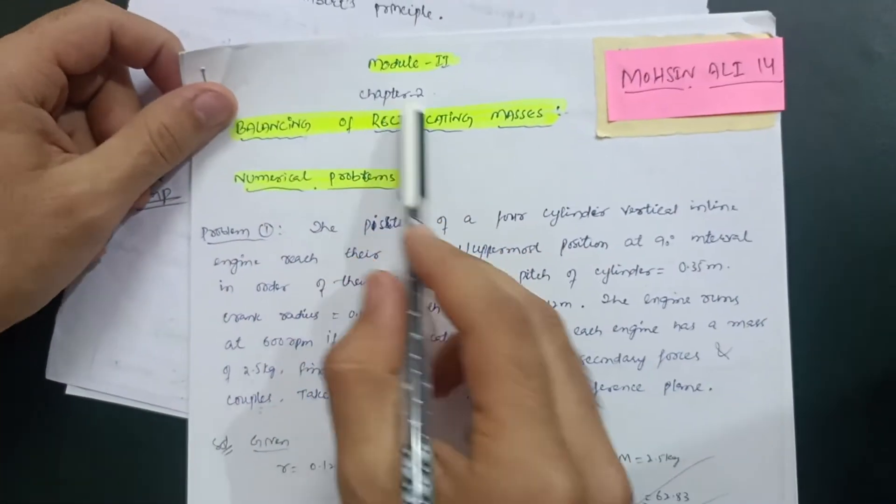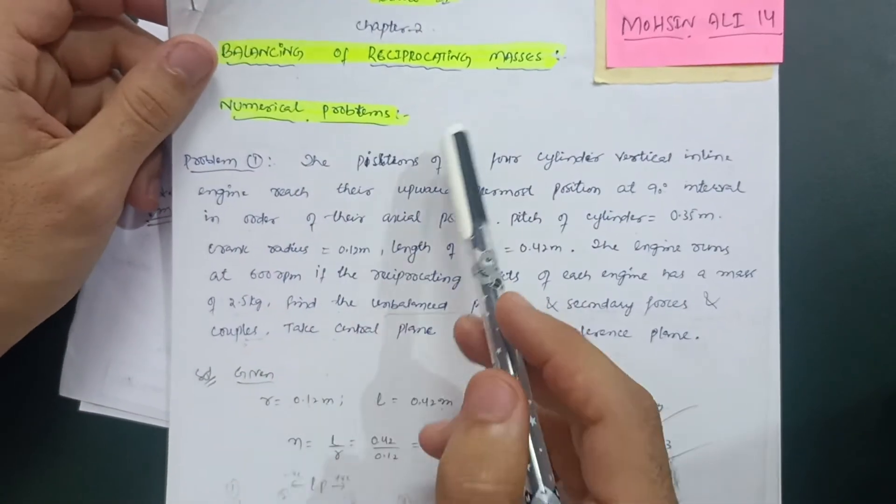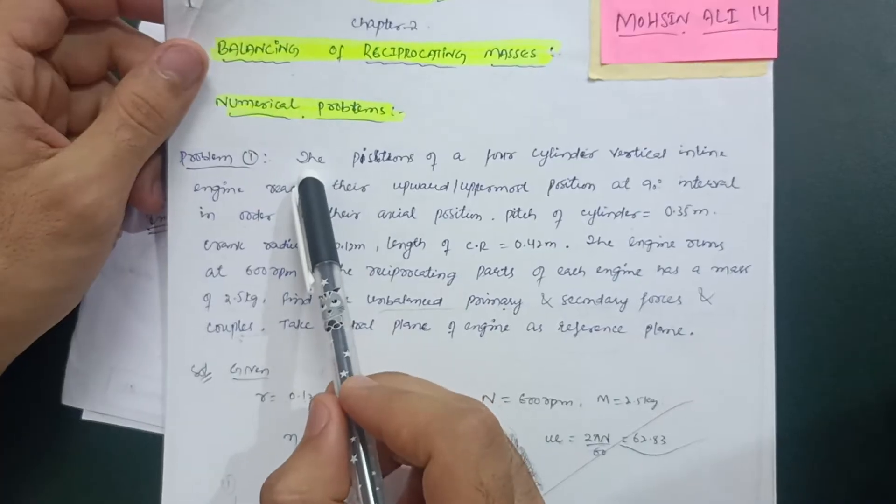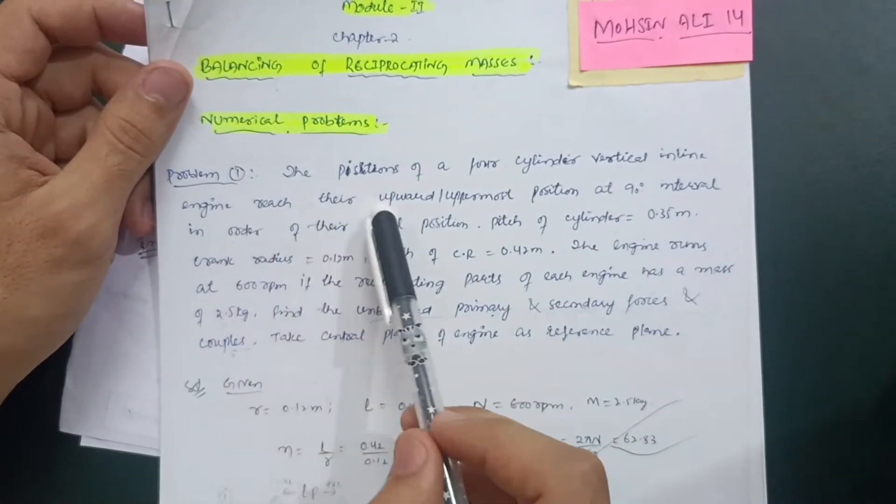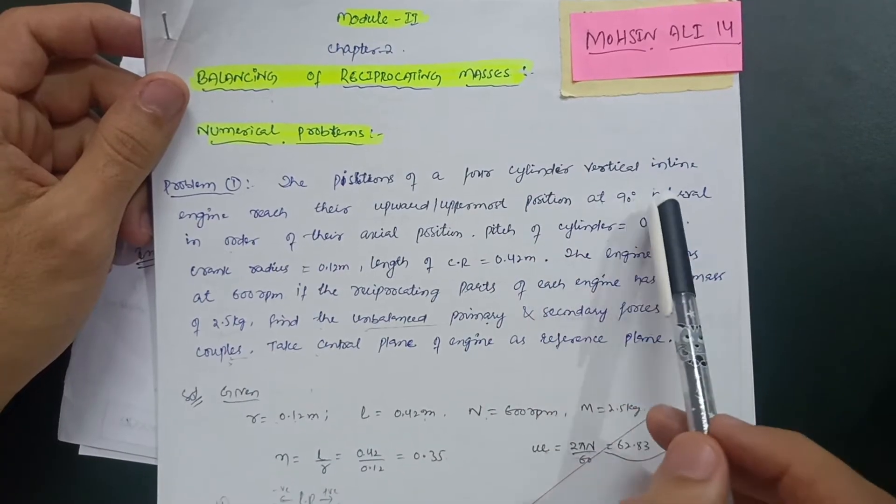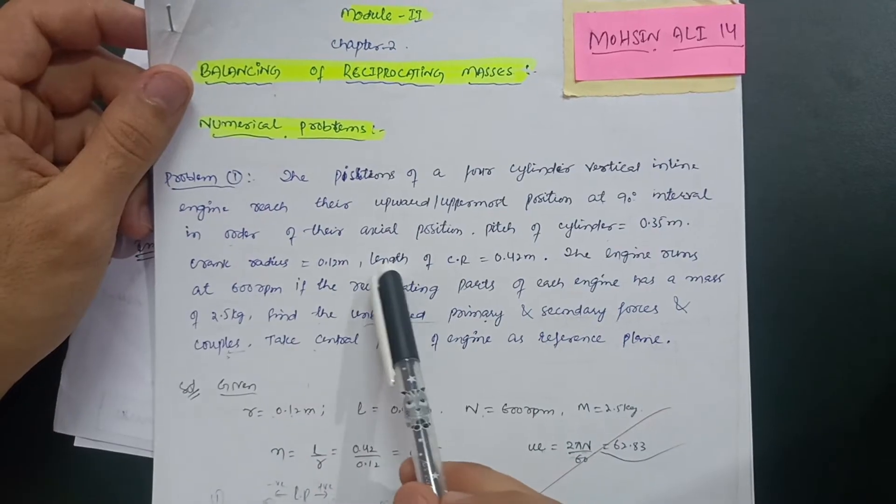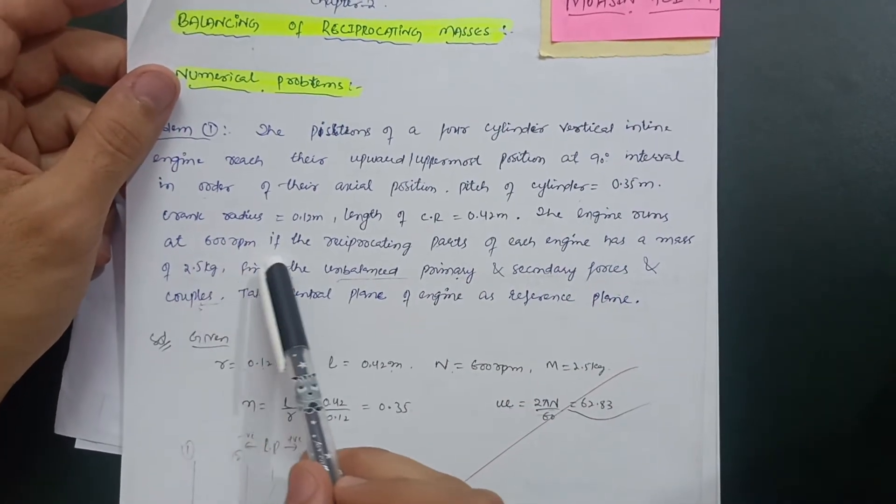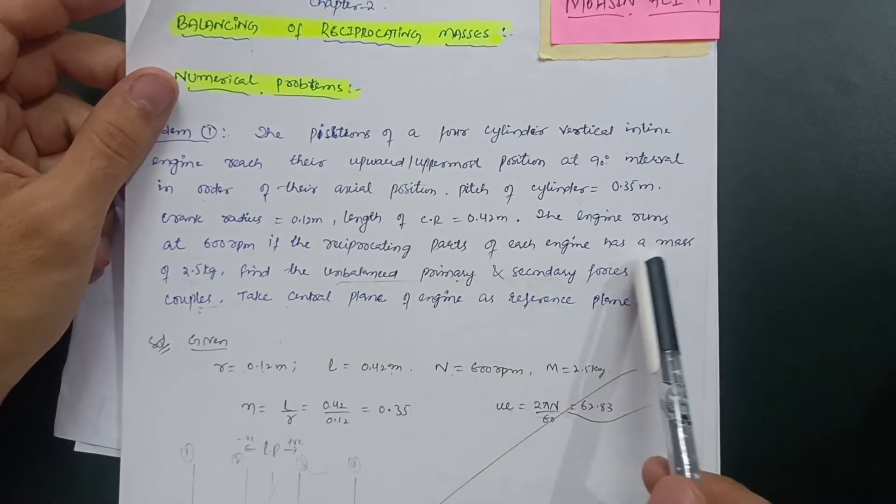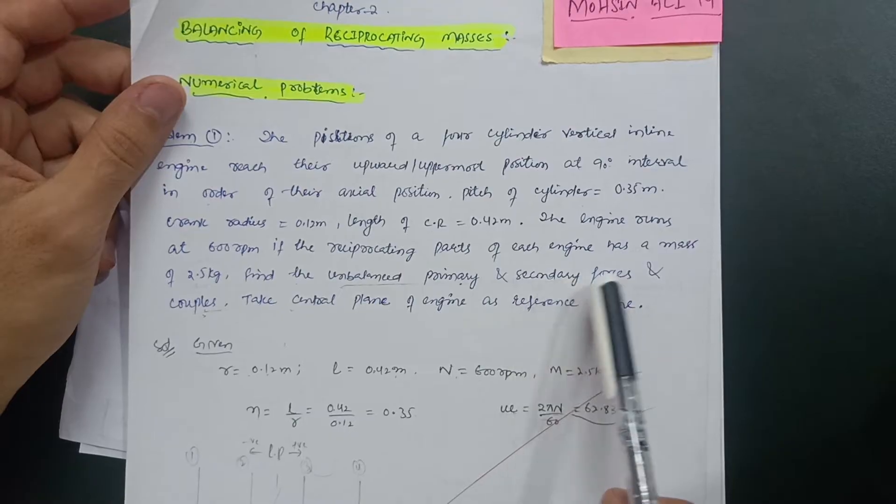This is Module 2, balancing of reciprocating masses. Numerical problems will be like: the pistons of a four-cylinder vertical inline engine reach their uppermost position at 90 degree intervals in order of their axial position. Pitch of the cylinder will be given, crank radius will be given, length of the connecting rod. The engine runs at 600 RPM. If the reciprocating parts of each engine has a mass of 2.5 kg, find the unbalanced primary and secondary forces and couples.